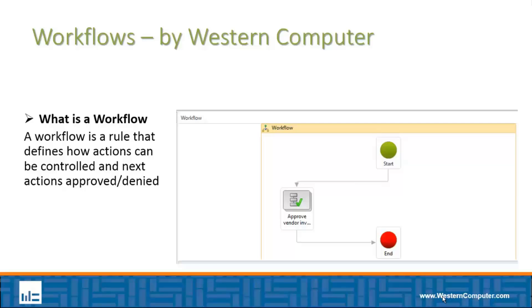If the amount is less than that threshold, it will automatically be approved. It's a way to create business processes, include them in AX, and have them triggered based on different conditions.